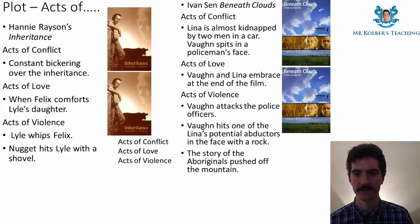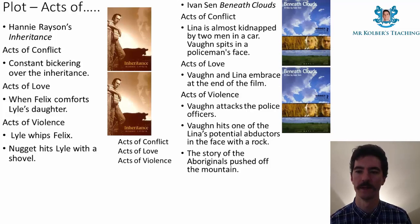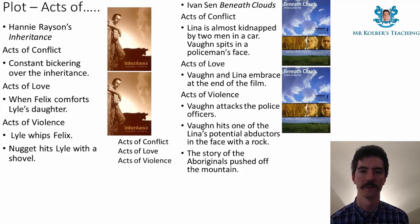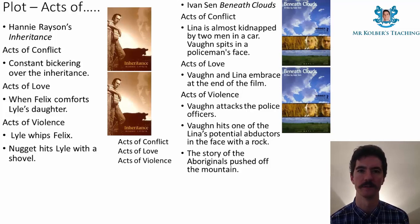Acts of violence in Beneath Clouds: when Vaughn attacks the police officers, and when Vaughn hits one of Lena's potential abductors in the face with a rock — when the two men try to grab her into their car, he grabs a rock, knocks the man out, and they run off. And then the story of when the Aboriginals were pushed off the mountain, which is Vaughn's story to Lena about acts of violence in the past perpetrated against Aboriginals.